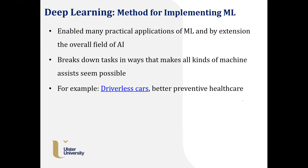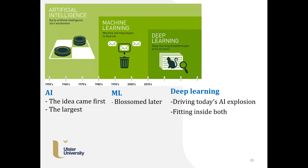Deep learning is another thing quite common now. It enabled many practical applications of ML by extending the overall field of AI. It breaks down tasks in ways that make all kinds of machine systems seem possible. AI came first as the largest field, then machine learning came into picture for classification, and then deep learning, which learns from data at quite a core level.